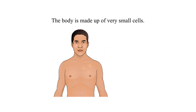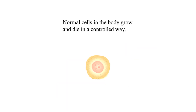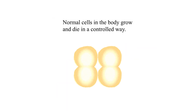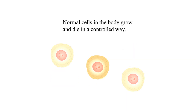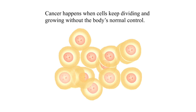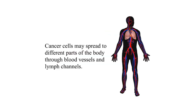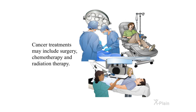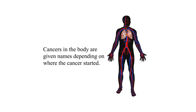Cancer and its causes: The body is made up of very small cells. Normal cells in the body grow and die in a controlled way. Cancer happens when cells keep dividing and growing without the body's normal control. Cancer cells may spread to different parts of the body through blood vessels and lymph channels. Cancer treatments may include surgery, chemotherapy, and radiation therapy.